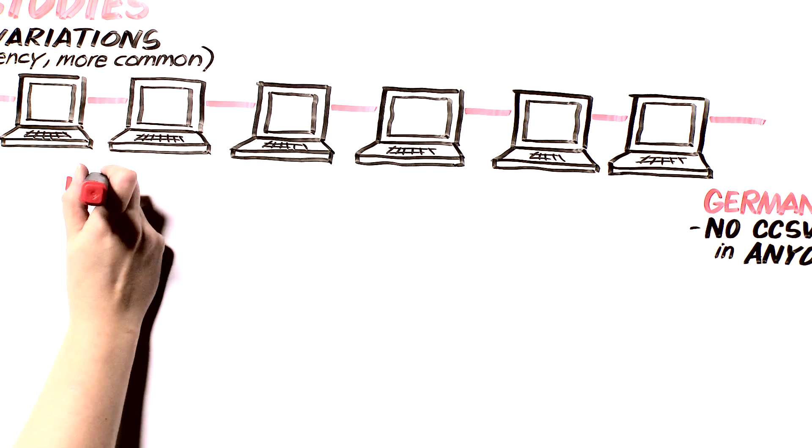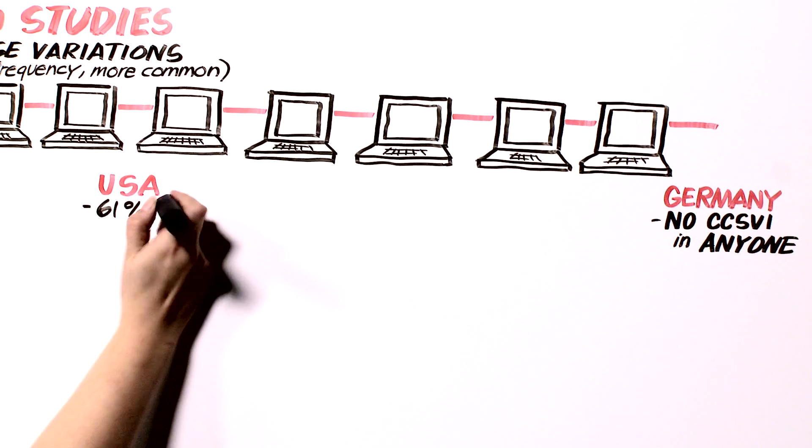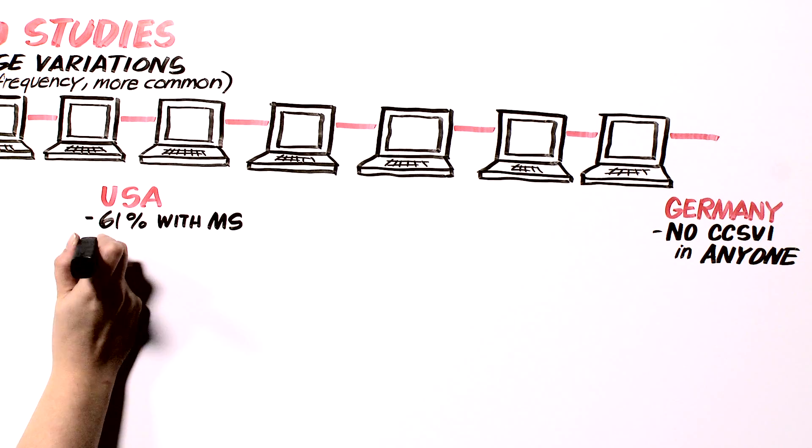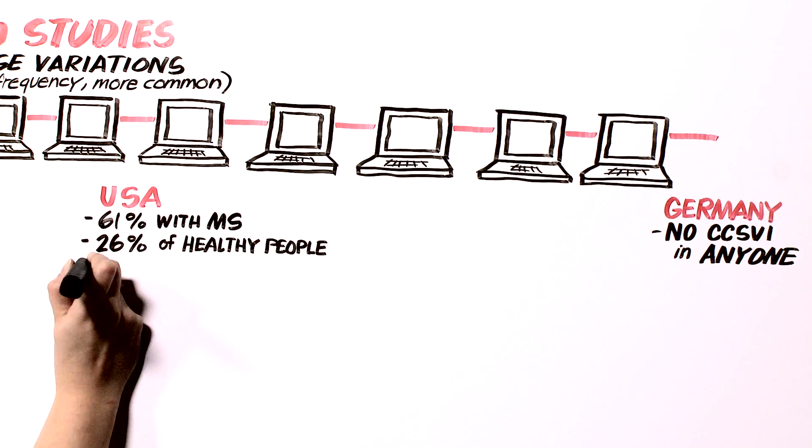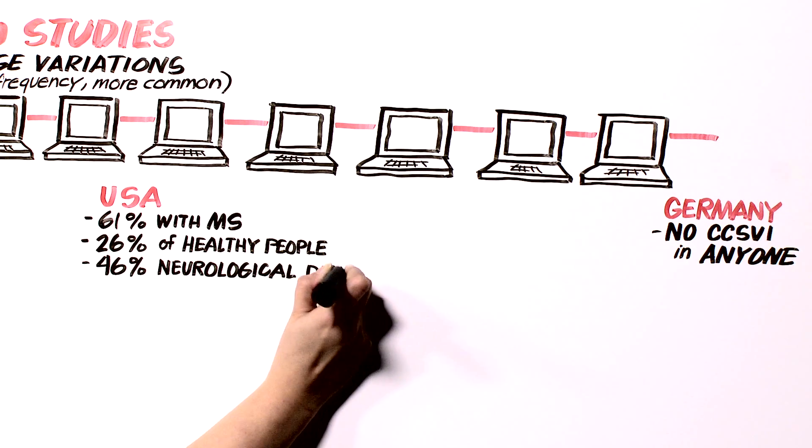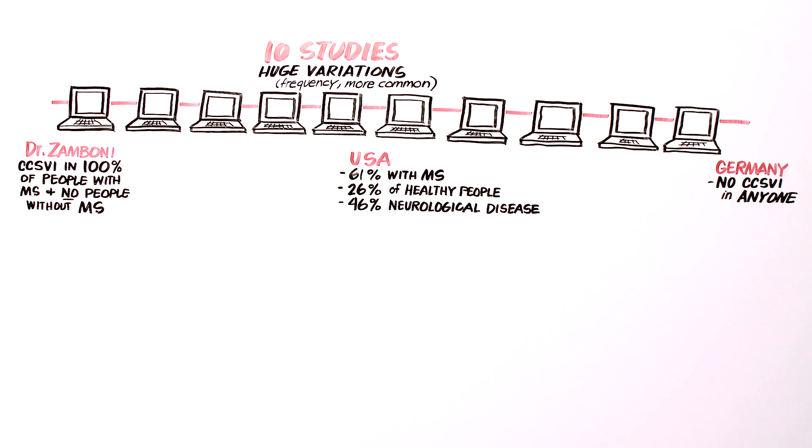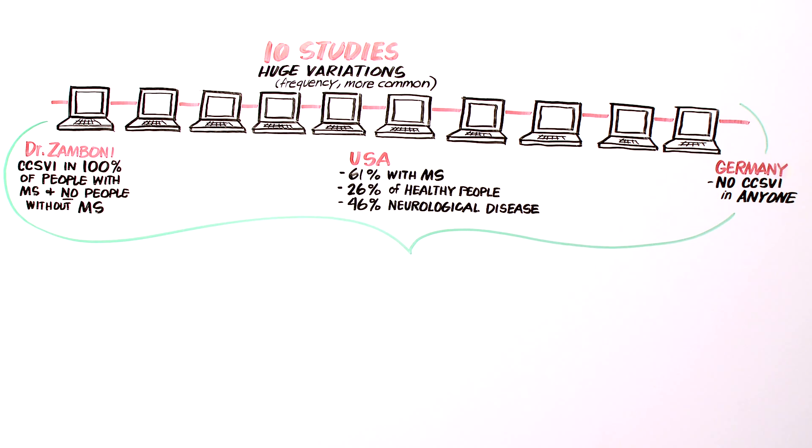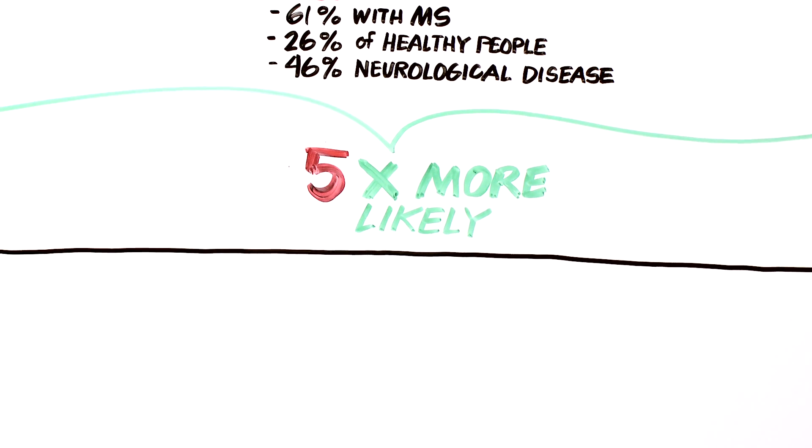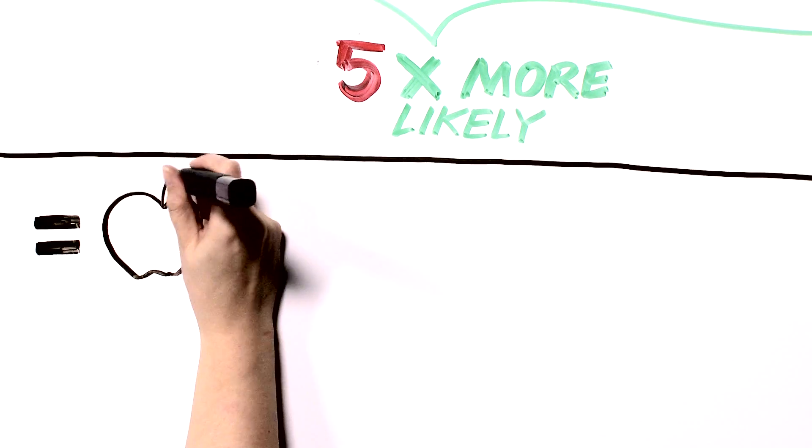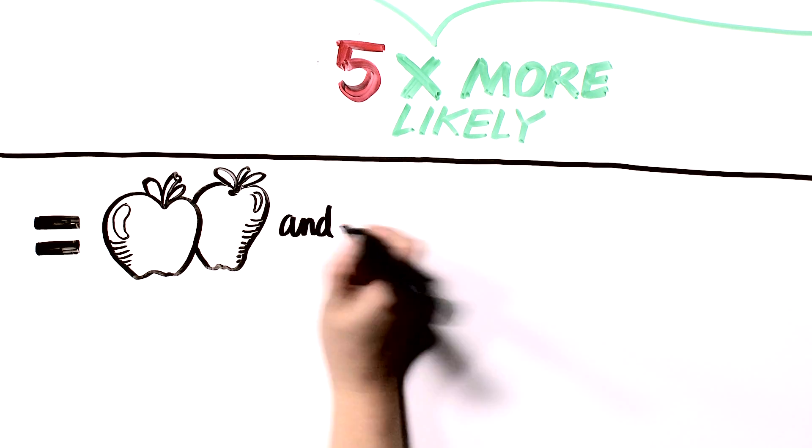And in the middle was the largest study, from the United States, that found CCSVI in 61% of people with MS, 26% of healthy people, and 46% of people with neurological diseases other than MS. When we combined all the data from all studies, we found that CCSVI was 13 times more likely to be found in persons with MS than healthy people. If we removed the study from Dr. Zamboni because of its exceptional results and combined the other nine studies, it changed to five times more likely. However, we quickly realized that the discrepancies among the studies meant that it is very difficult to interpret the results of the combined analysis.